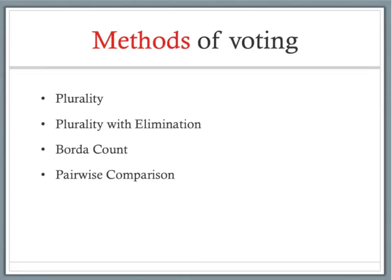Now that we have our preference table, we're going to talk about methods of voting. There are 4 main methods that we're going to cover: plurality, plurality with elimination, Borda count, and pairwise comparison. We're going to go through the steps on how to do each one. Just listen to the explanation first, then you can pause the video to record all the words.